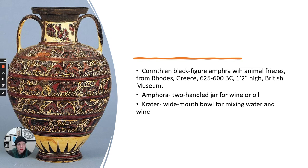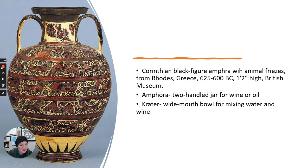Just really quick — this is a sphinx, so we have this woman-bird creature. There's a lion, another lion, and a boar, so you can identify some of these creatures in here. Next, we'll talk about the archaic period.